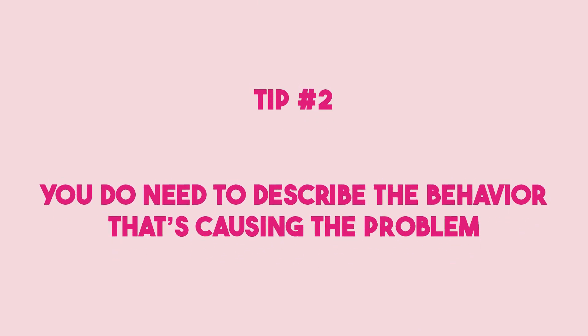The next thing is that you do need to describe the behavior that's causing the problem, but you need to do it in a way that doesn't assign blame. So you might say something along the lines of, 'I feel really frustrated when I see clothes on the floor rather than in the hamper.' You're not using the word 'you.' It becomes: I see them, and I get this emotional response to what I see. So you've described the behavior or the outcome, but without making the other person feel like they are being criticized.